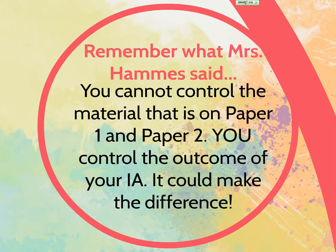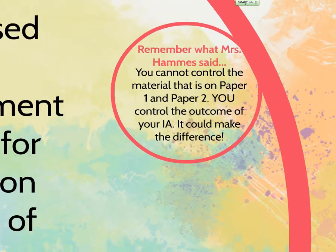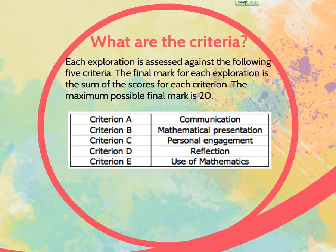You have no idea what's going to be on those tests — it could be quadratic functions, exponentials, binomial expansion, circular trigonometry, statistics, or calculus. You can't really control what's on paper one and paper two, but you can control the outcome of your IA because you get to choose a topic that interests you. If you know you're not a good test taker, you may want to take this IA even more seriously because it can make a difference. The IA is worth 20 points, and those points fall into different criteria. Communication is about whether you're explaining in a way that people can understand.